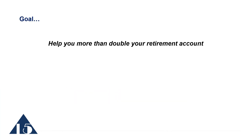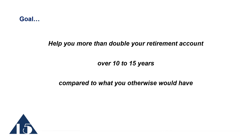Our goal is to help you more than double your retirement accounts over a 10 to 15 year period compared to what you would otherwise have using your current investment activities or alternatives available in the marketplace — after all fees and costs. If you increase your returns by 5 percentage points per year on average, you'll have about twice as much money after 15 years. This is simply the miracle of compounding.